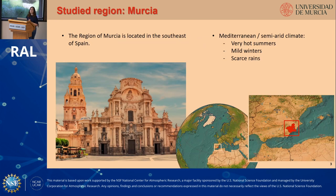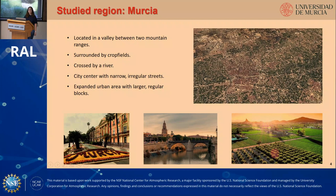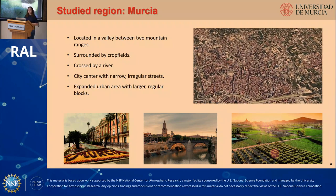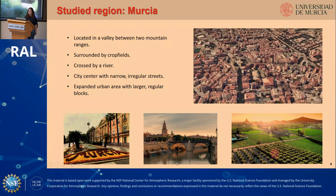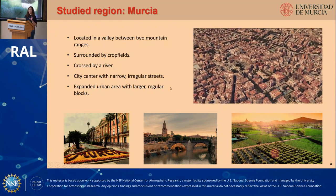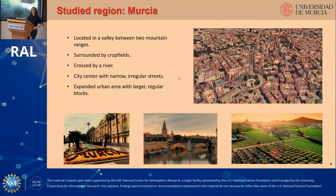We've chosen to focus our study in the region of Murcia, located in the south-east of Spain, which has a Mediterranean and semi-arid climate with very hot summers, mild winters, and scarce rains. We focus on its capital, the city of Murcia, located in a valley between two mountain ranges, mainly surrounded by crop fields. Its city center is crossed by a river and formed by narrow and irregular streets, and it also has an expanded area with larger and regular blocks.